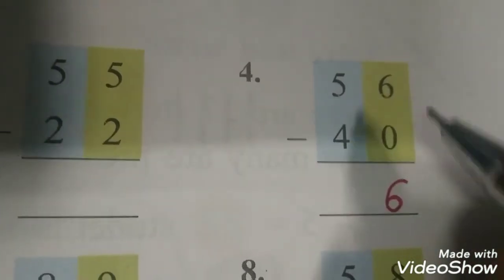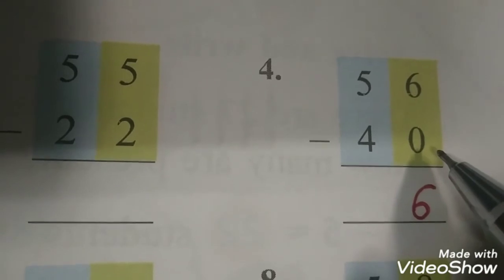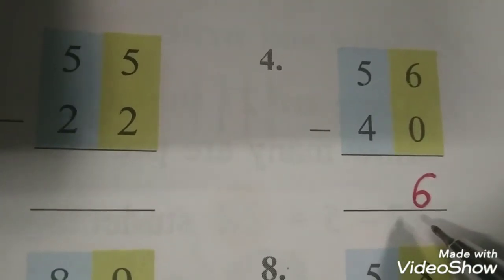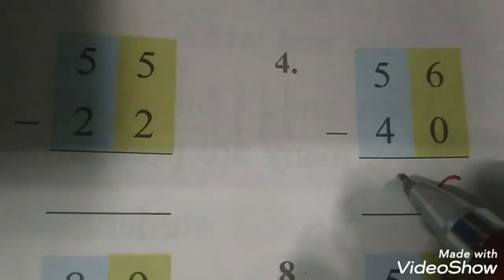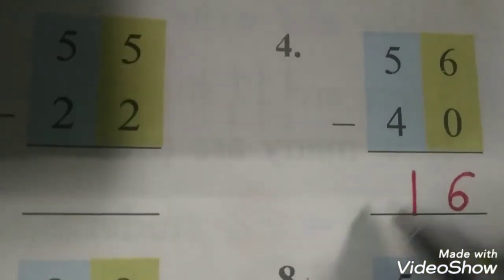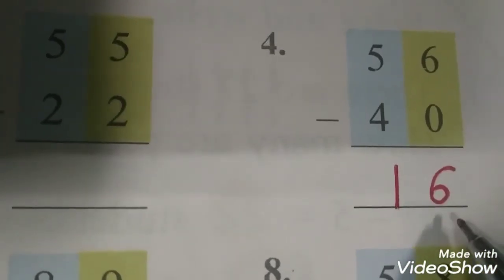The answer will be 6. Yeh maine aapne aapko bataya tha, kisi bhi number mein se agar aap 0 minus karenge to answer vo number khudi hoga. 6 minus 0, 0 means nothing. 5 minus 4, 1. So 56 minus 40, our answer is 16.